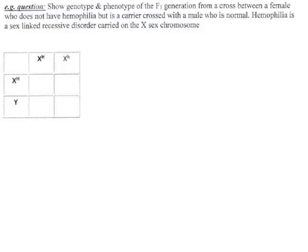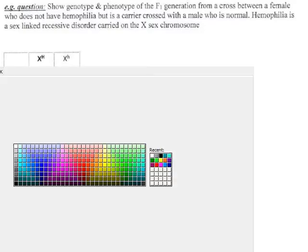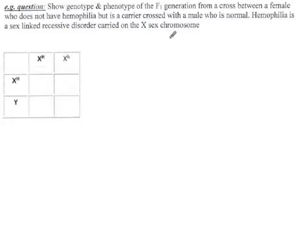We have a new thing to talk about, and it is sex-linked traits. So far, all the traits that we have been talking about in humans have been on chromosomes 1 through 22, which we call the autosomes, and which are the same in men and women.